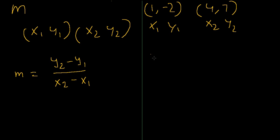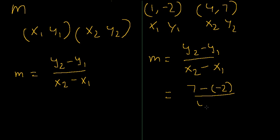Now according to the formula m equals y₂ minus y₁ over x₂ minus x₁, we'll have y₂ is 7 minus y₁ is -2 over x₂ is 4 and x₁ is 1.